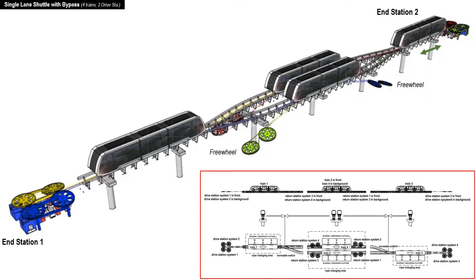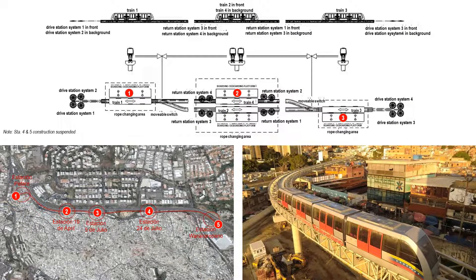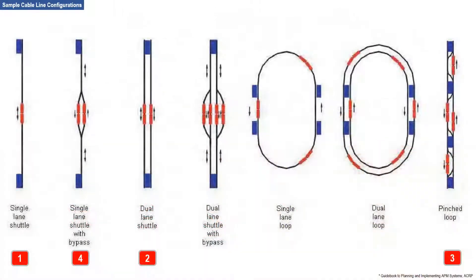This is the schematic diagram of this configuration. A similar experience of this configuration is the Caracas cable liner — the drawing has only three stations, while the actual Caracas cable liner is designed to have five stations. There are several different configurations of a cable liner. In this chapter, we will show four configurations: the single lane shuttle, dual lane shuttle, pinched loop, and the single lane shuttle with bypass.